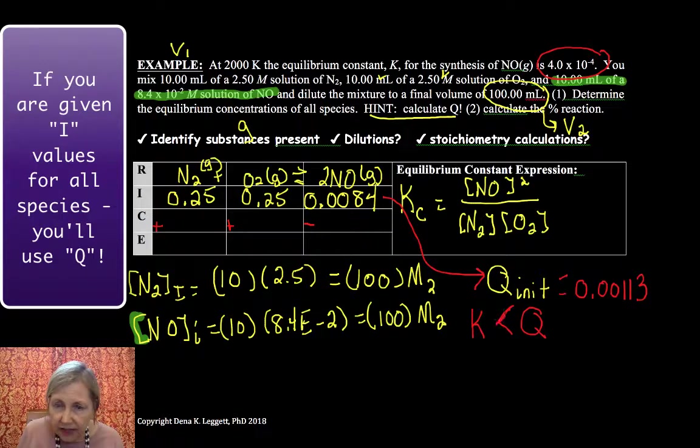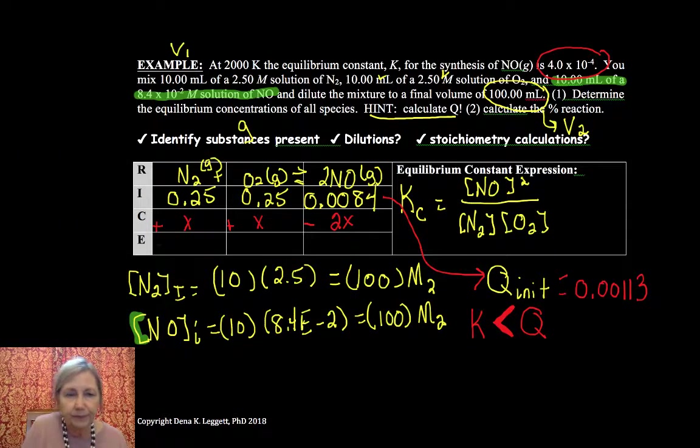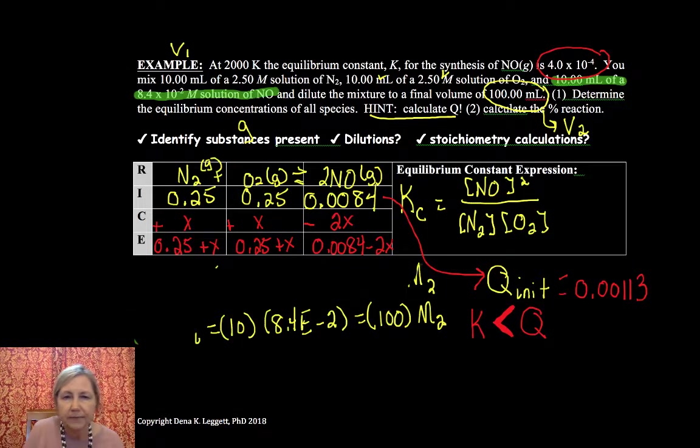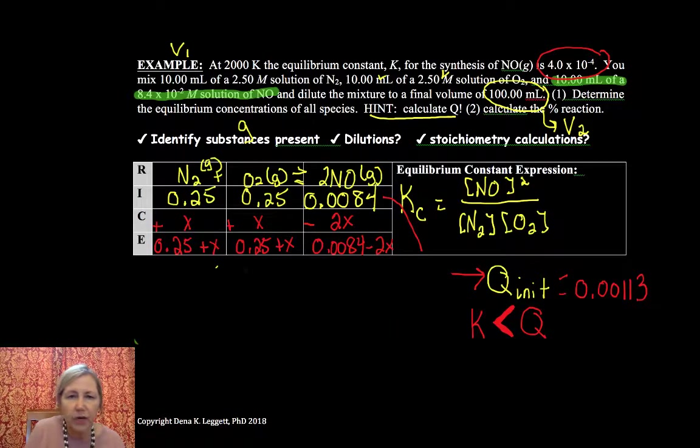So remember, if you put K on the left-hand side, the greater than or equal to sign points to the direction you need to shift to establish your equilibrium. So I have plus x, plus x, minus 2x. 0.25 plus x, 0.25 plus x, and 0.0084 minus 2x. Again, this looks like it's going to be some big hairy math, but fortunately for us there is a simplification. You won't have to use the quadratic equation.